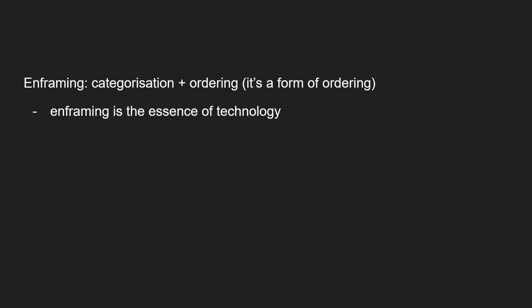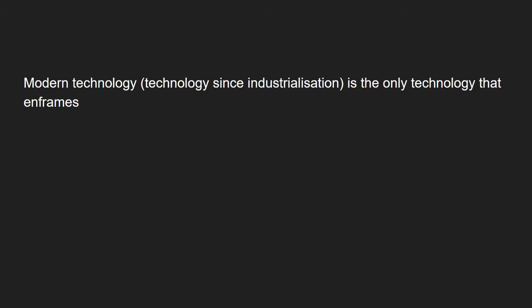He sees in the modern world the only technology that embodies enframing is modern technology. But how can enframing be the essence of technology if only modern technology carries out enframing, you may ask? A valid question, dear viewer. But Heidegger explains the essence of enframing has always been present in technology. But up until the modern age, this essence has been hidden. It is therefore only during the industrial revolution enframing has revealed itself to the world.